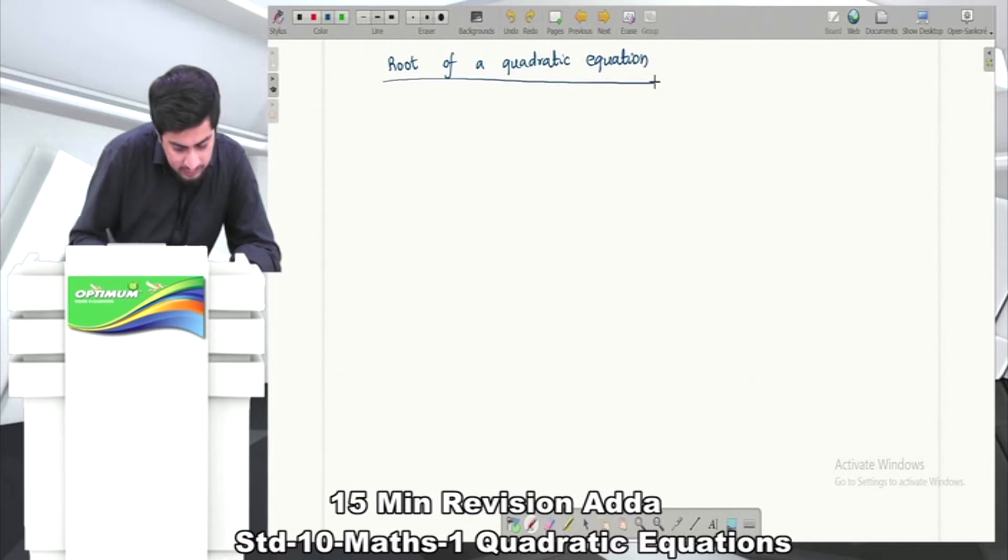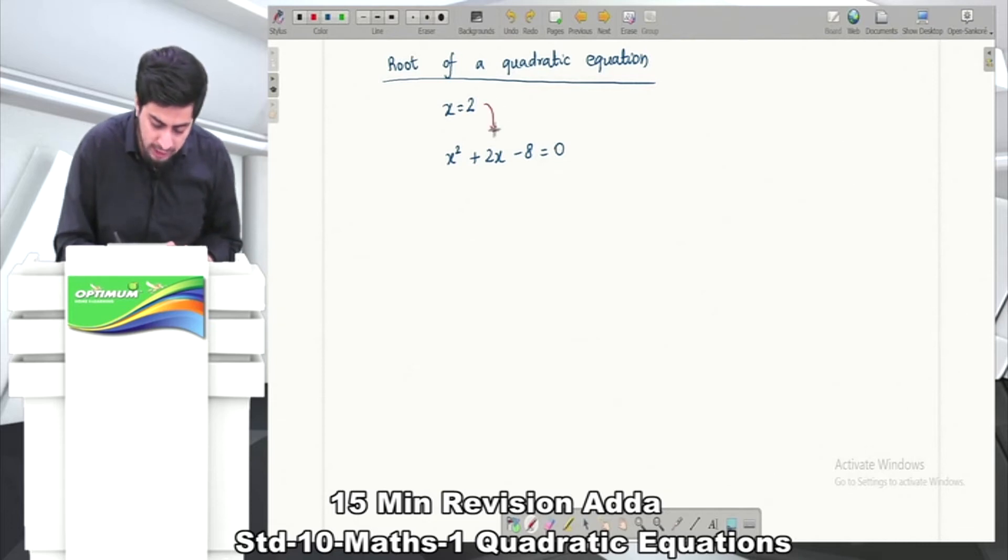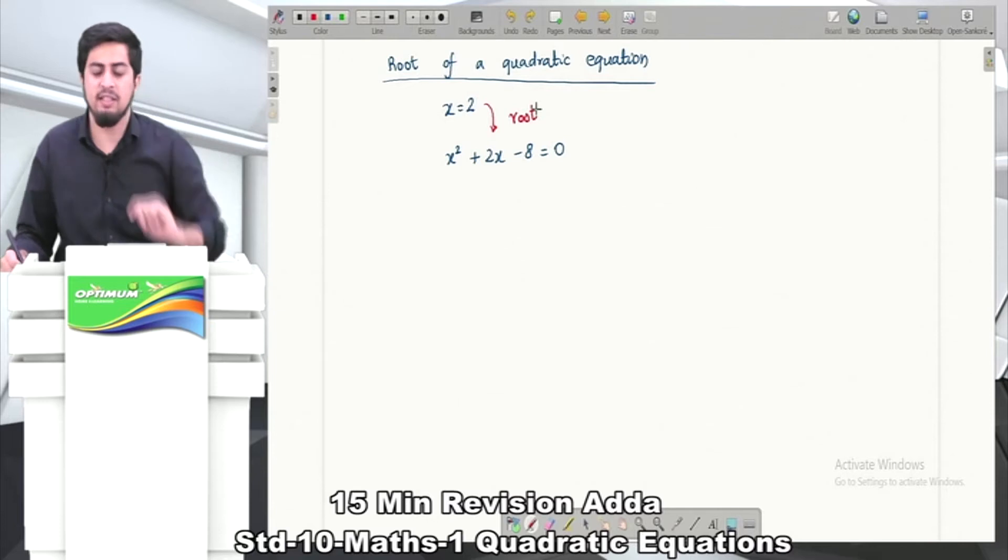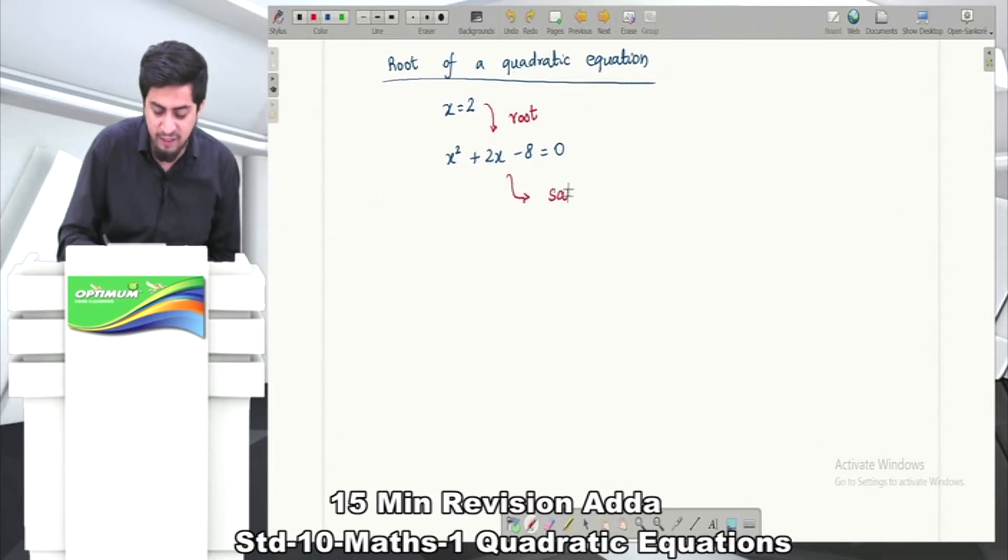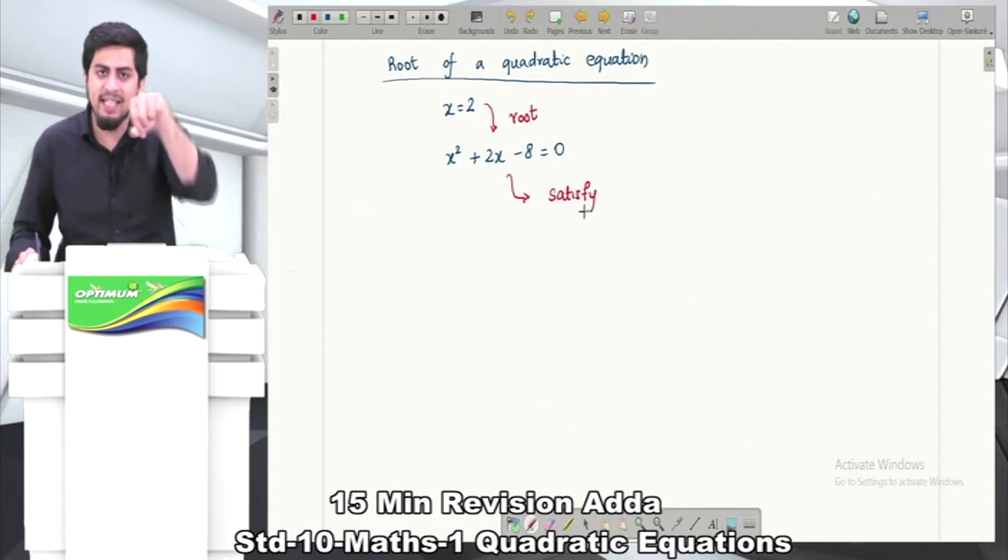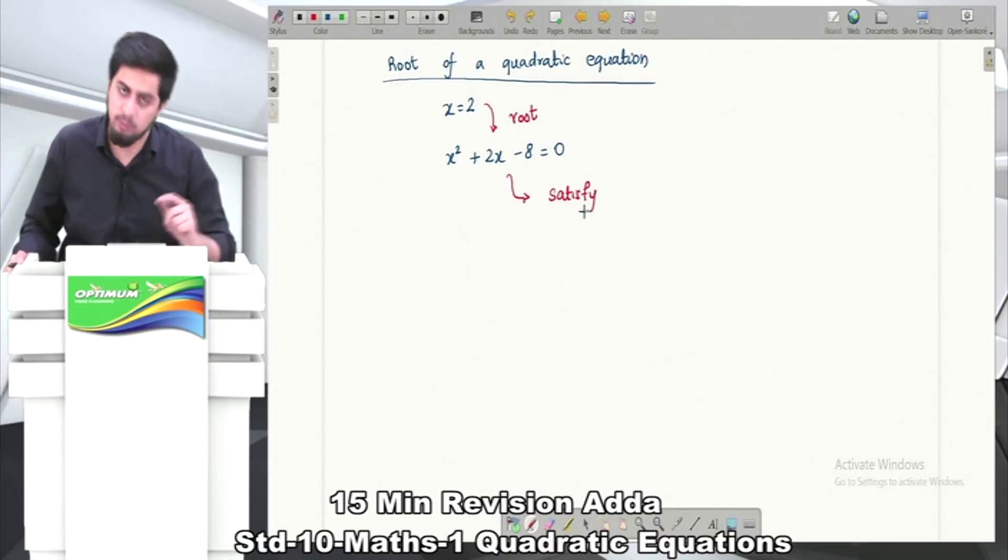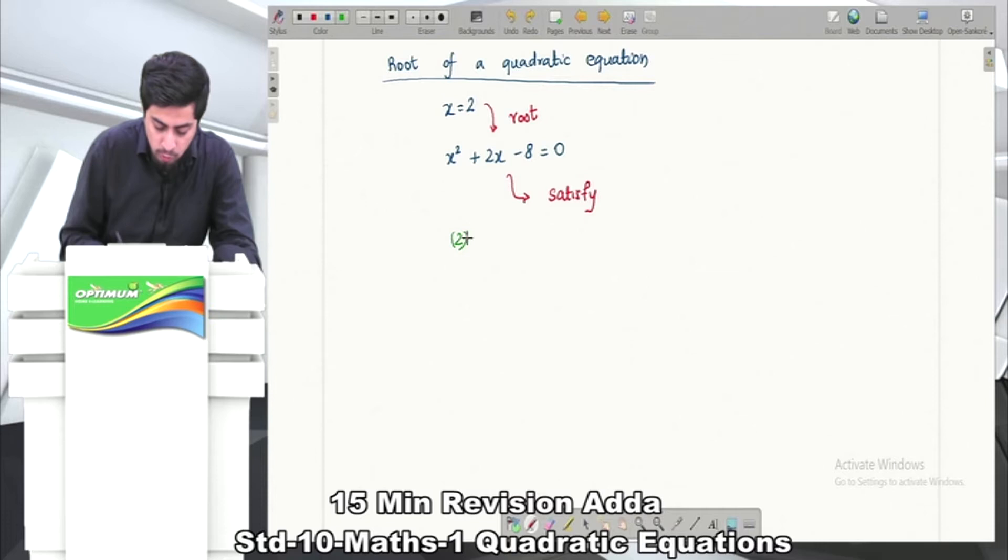For example, if we say x = 2 is the root of a quadratic equation, let's say x² + 2x - 8 = 0. If x = 2 is the root of this quadratic equation, then it should satisfy the equation. If it's a root, it will satisfy. Satisfy means if I put that value in place of x, then left-hand side and right-hand side should match. If I put 2 in place of x, I get 2² + 2(2) - 8 = 0. That's 4 + 4 - 8 = 0, so 0 = 0. This satisfies, hence I can say this is the root.